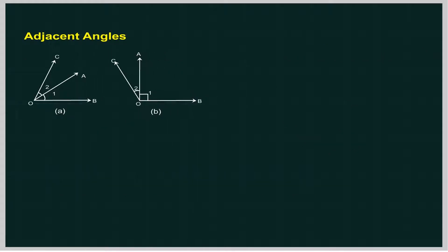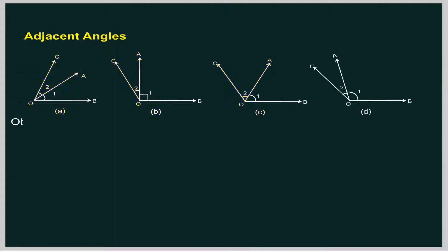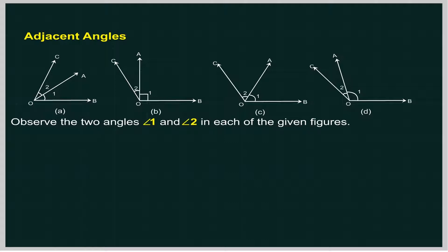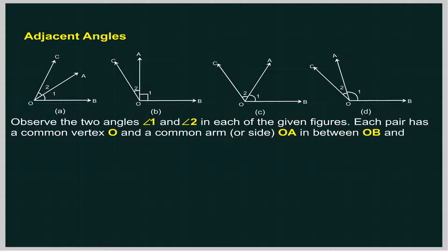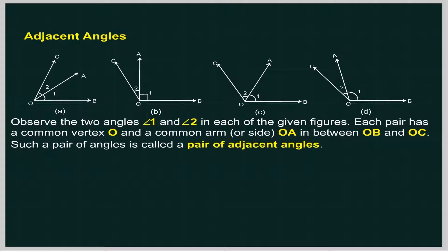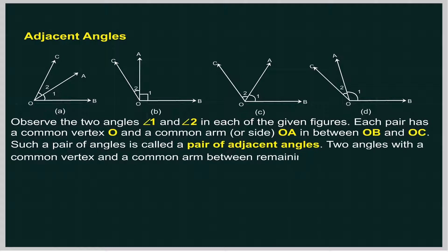Adjacent angles. Observe the two angles, angle 1 and angle 2, in each of the given figures. Each pair has a common vertex O and a common arm OA in between OB and OC. Such a pair of angles is called a pair of adjacent angles. Two angles with a common vertex and a common arm between the remaining two uncommon arms are called adjacent angles.